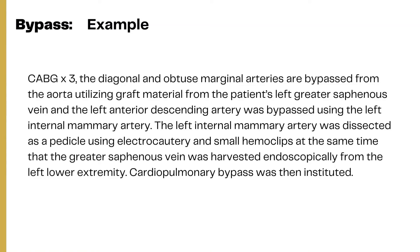Here is a coding example: coronary artery bypass grafting times three, meaning three areas. The diagonal and obtuse marginal arteries are bypassed from the aorta utilizing graft material from the patient's left greater saphenous vein. The left anterior descending artery was bypassed using the left internal mammary artery. The left internal mammary artery was dissected as a pedicle using electrocautery and small hemoclips, at the same time that the greater saphenous vein was harvested endoscopically from the left lower extremity. Cardiopulmonary bypass was then instituted.